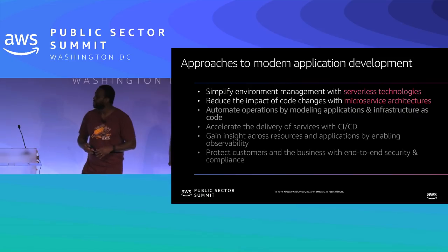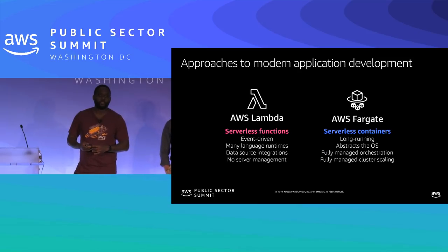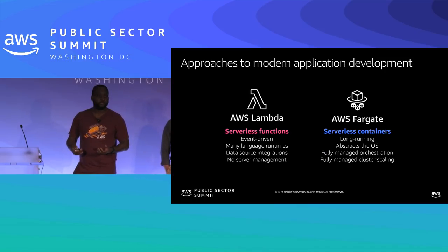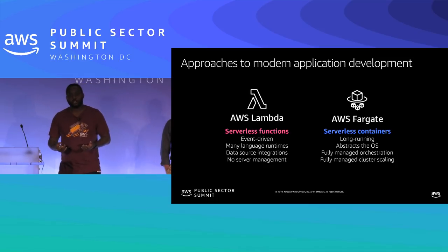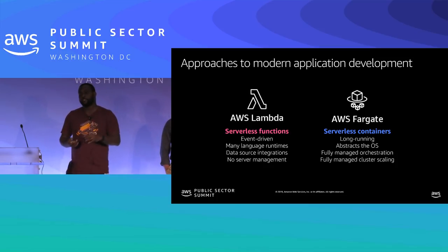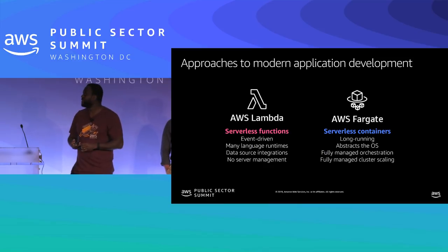When we talk about serverless compute, Lambda is our serverless functions service. It's event-driven, supports many language runtimes including custom runtimes, has data source integrations with RDS and DynamoDB, and requires no server management. You just write your function code, specify CPU and memory, and the system scales up and down based on demand. AWS Fargate is our serverless container service — for long-running processes that exceed Lambda's invocation timeout, Fargate abstracts away the OS, handles patching, and provides fully managed orchestration.